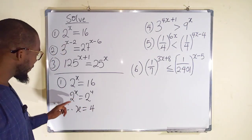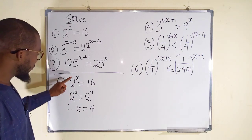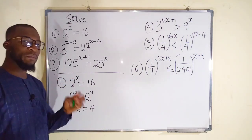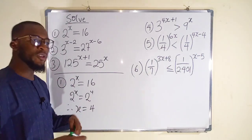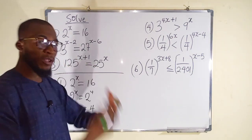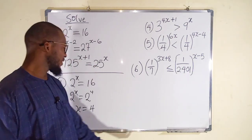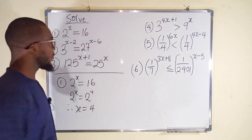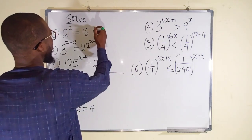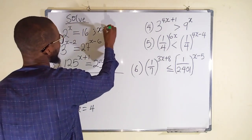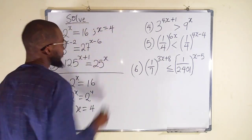We can test it: 2 multiplied by 2 is 4, multiplied by 2 is 8, multiplied by 2 is 16. Hence x is equal to 4.